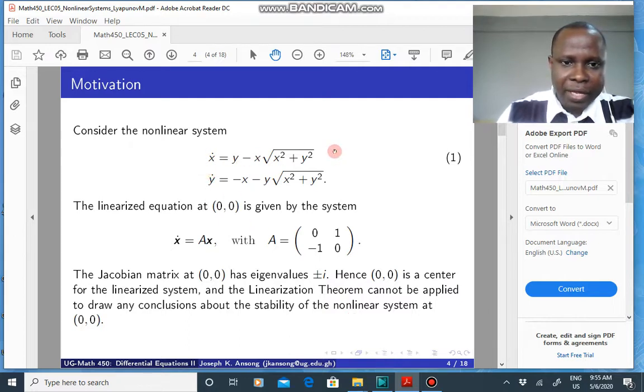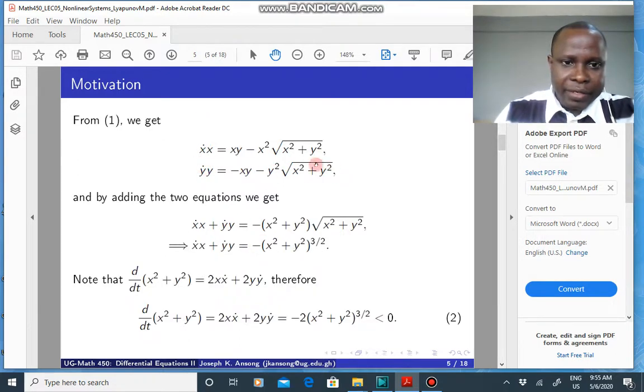If you multiply the first equation here by x and the second by y, you get these two equations. If you add them, you're going to get the third equation here, which you can rewrite as this. X squared plus y squared is to the power of 1. This is to the power of 1 half. If you add them, you get the power 3 over 2. So we just manipulated these two equations to come up with this.